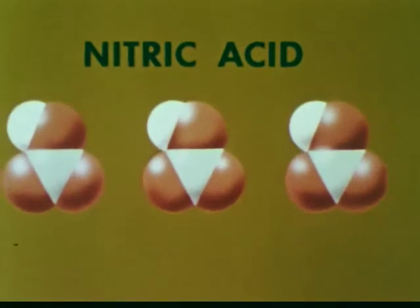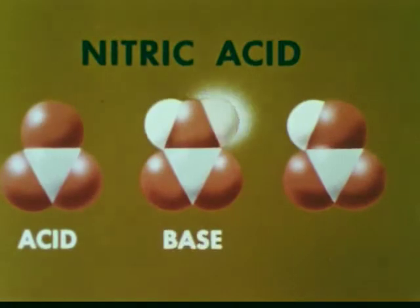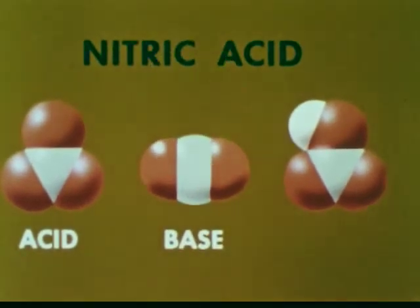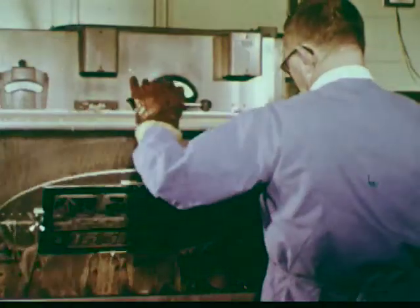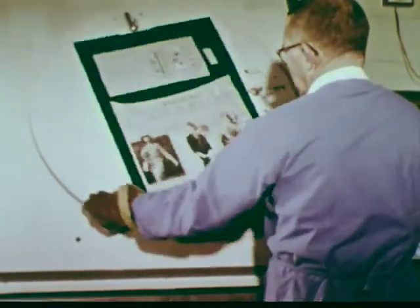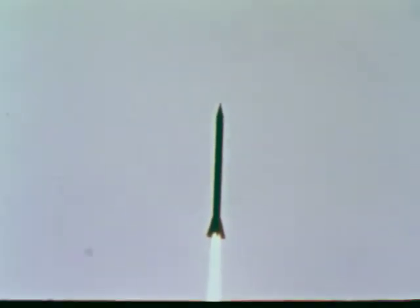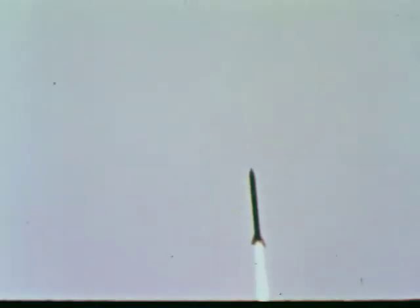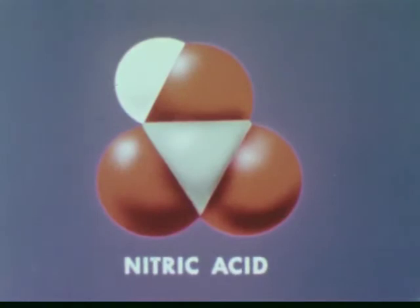We have seen nitric acid can act as an acid, and we have seen it can act as a base. Now let's see how nitric acid acts as an oxidizing agent. Photographic etching is done by slowly oxidizing metal plates with concentrated nitric acid. Yet the same substance — concentrated nitric acid — is often used to oxidize the fuel in rockets rapidly and vigorously. Let's investigate the oxidizing power of nitric acid, which acts in such different ways.